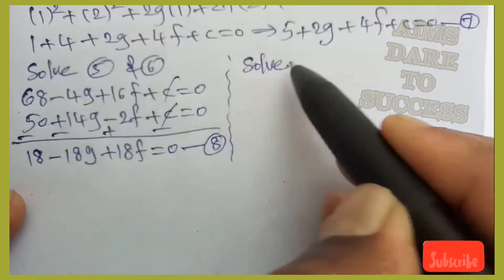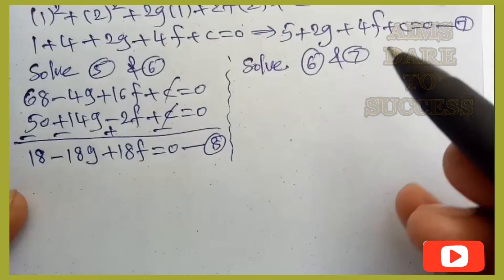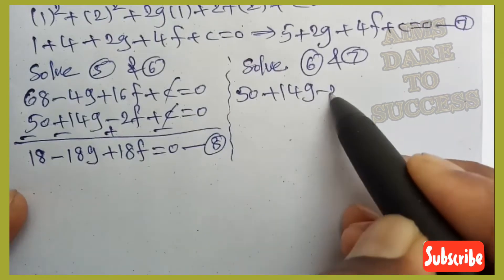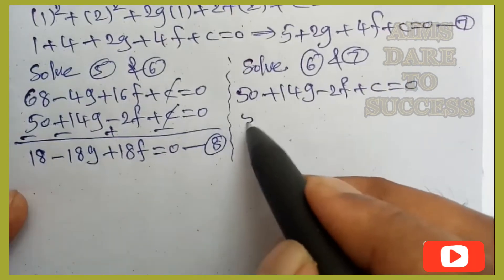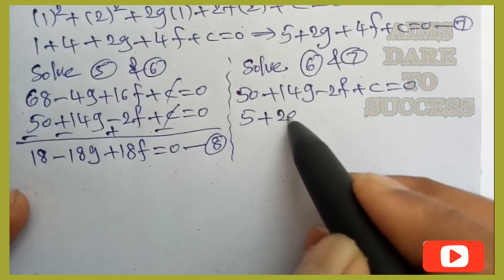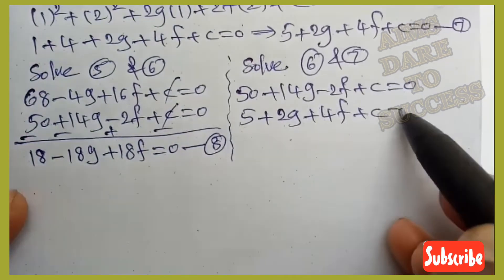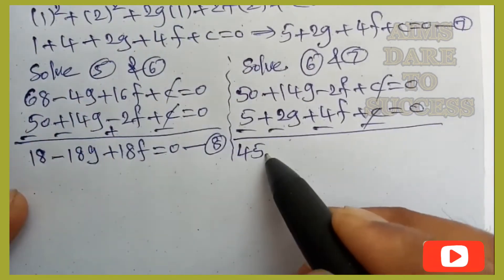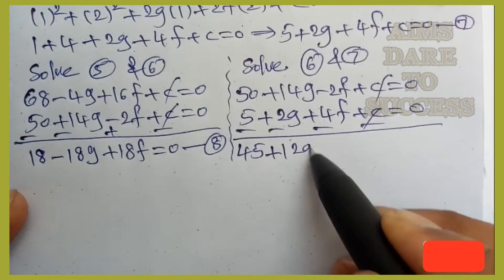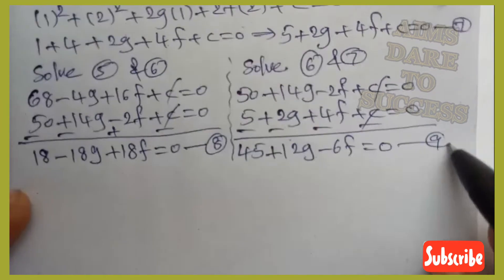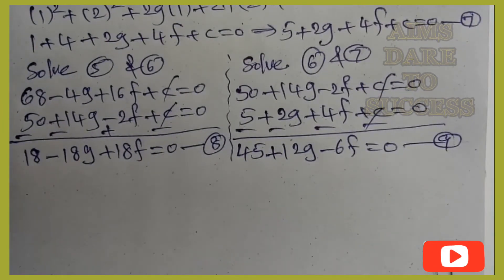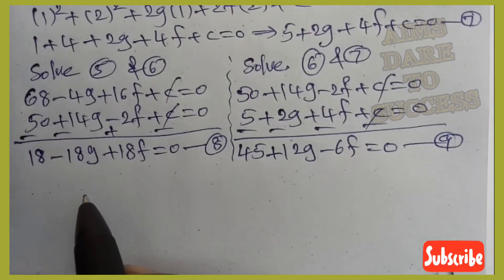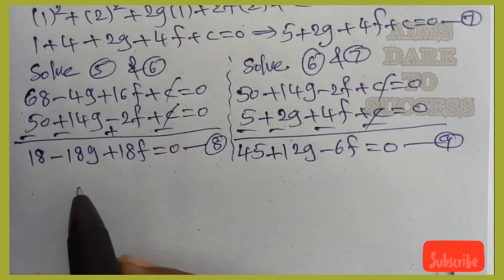Solving equations 6 and 7 to eliminate c: equation 6 is 50+14g−2f+c=0, equation 7 is 5+2g+4f+c=0. Subtracting: 50−5=45, 14g−2g=12g, −2f−4f=−6f, c cancels. So 45+12g−6f=0 (equation 9).